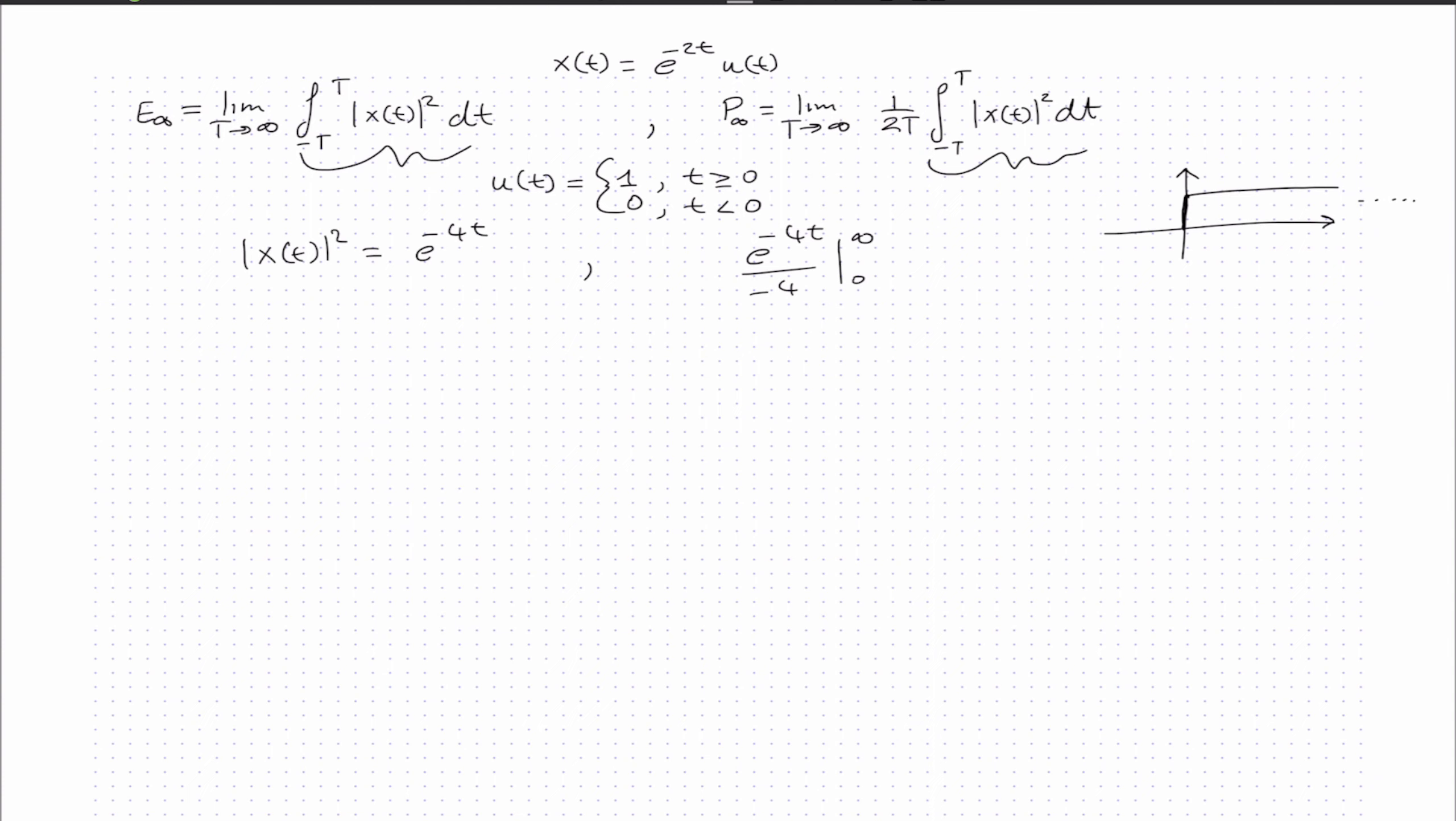Evaluating this, e^(-4t) as t approaches infinity is 0. We have 0 minus the negative from the denominator 4, which becomes positive. e^0 is 1, so that's 1 over 4.